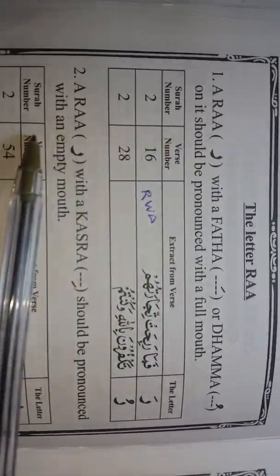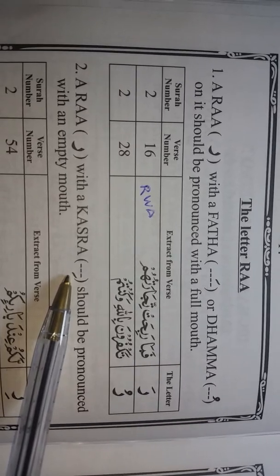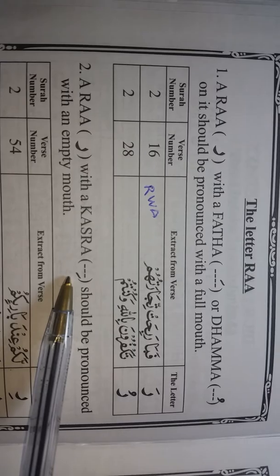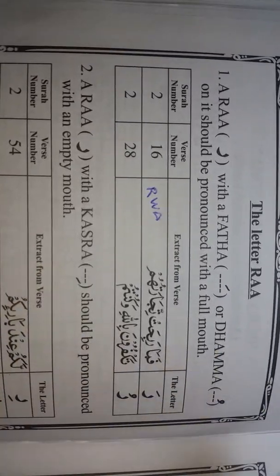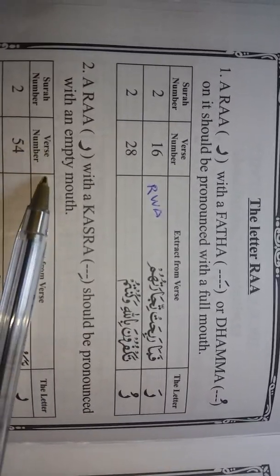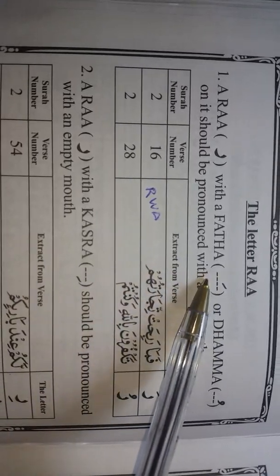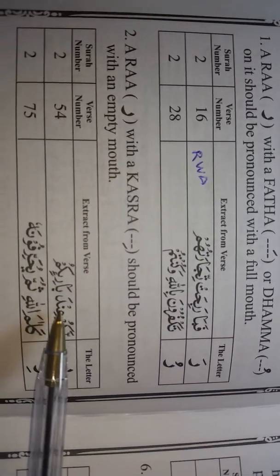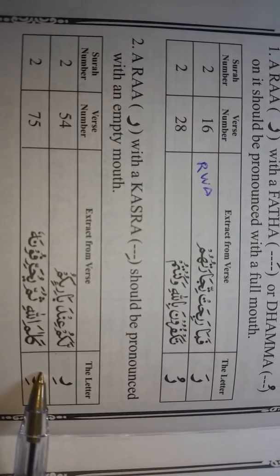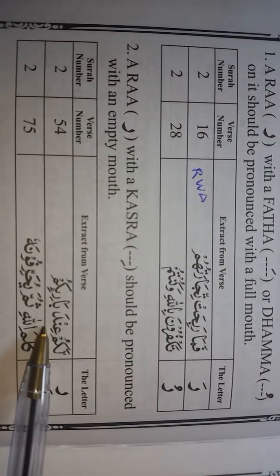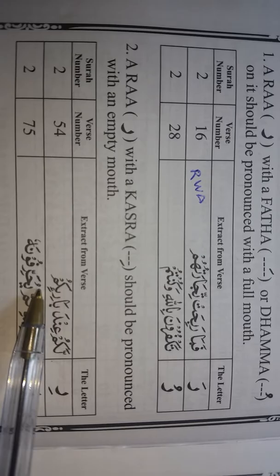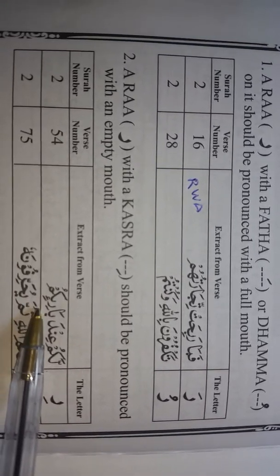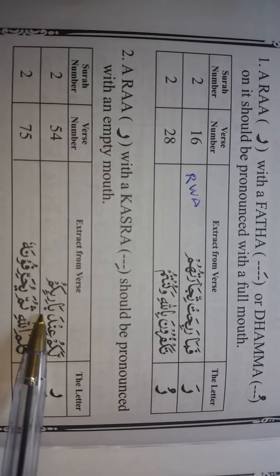The second Ra is with Kasra. Kasra is the line underneath. Fatha is on top, then Kasra is underneath. It should be pronounced with an empty mouth. The difference between Ra — here we say Ra — and Ra with Kasra is, for example, Lakum inda bari'ikum. We don't say bari'ikum, but we say bari'ikum.